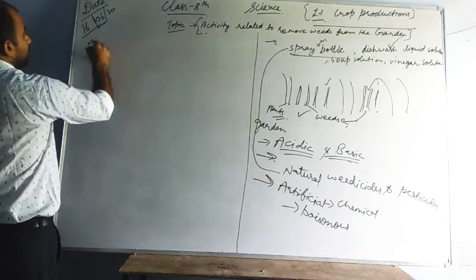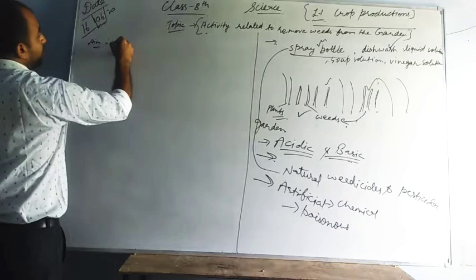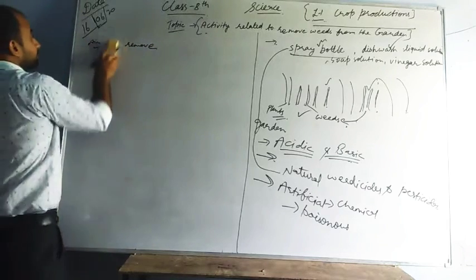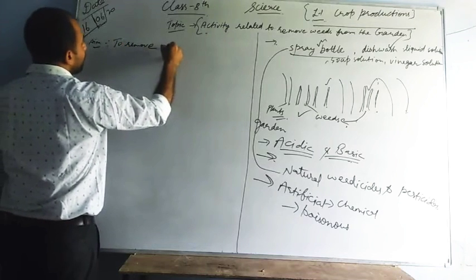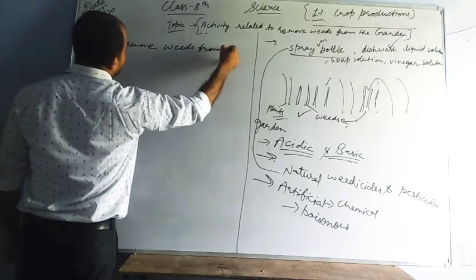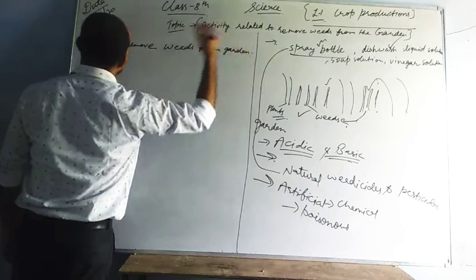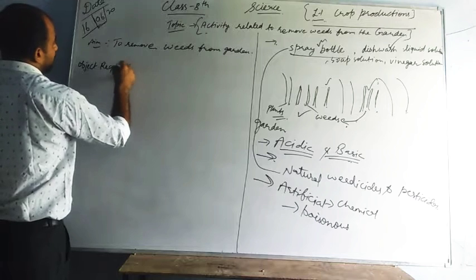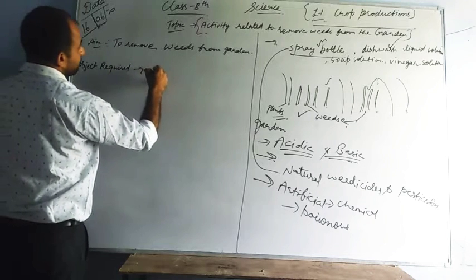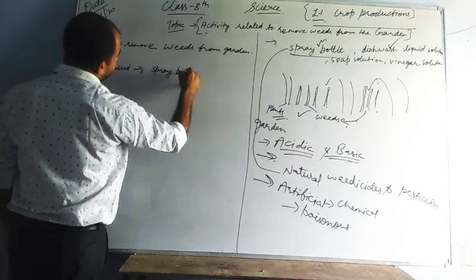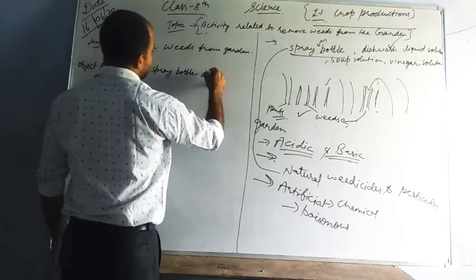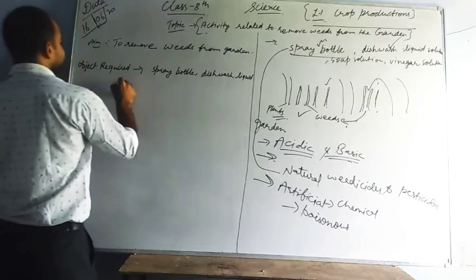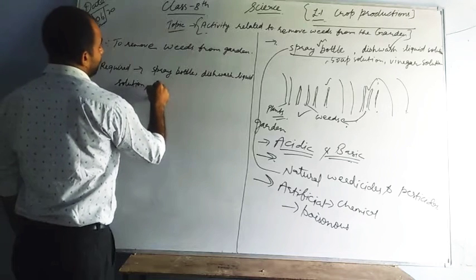Now let us write this activity formally. The aim is: to remove weeds from the garden. Objects required: a spray bottle, dishwash liquid solution, and vinegar solution.